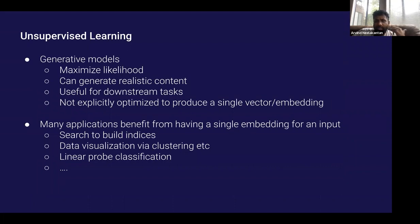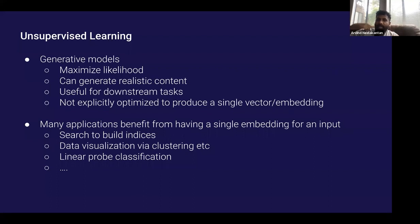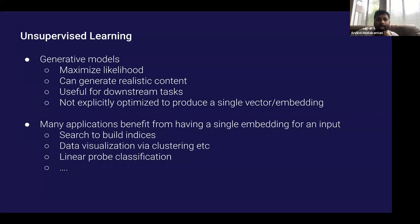That property — having a single vector representation for an input — could actually be useful for many tasks. Think about an application like search: you want to search over millions or billions of documents. You would process them offline, compute some kind of representation, and build an index. This is how search systems like Google work, and there's no natural way to do this with the output of a generative model — you can't really use it to build vector indices of large collections. Similarly for data visualization and clustering.